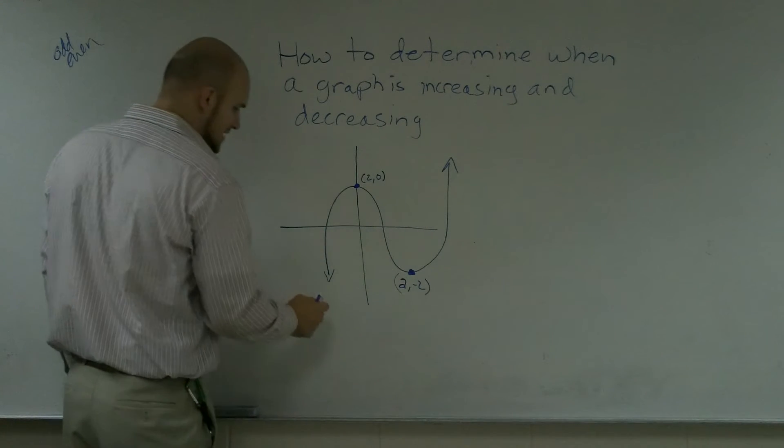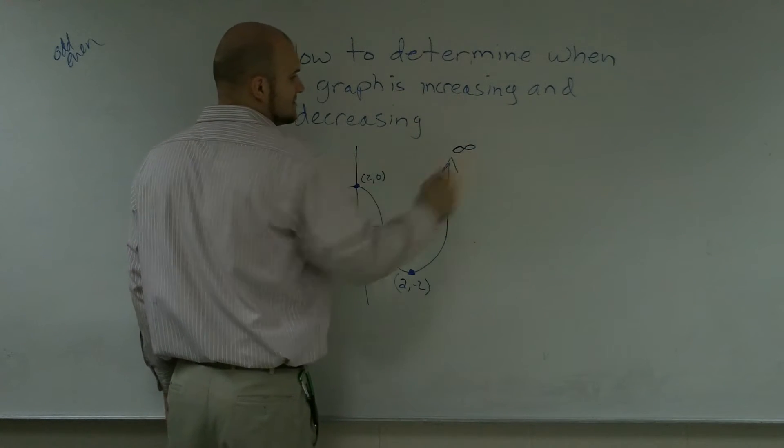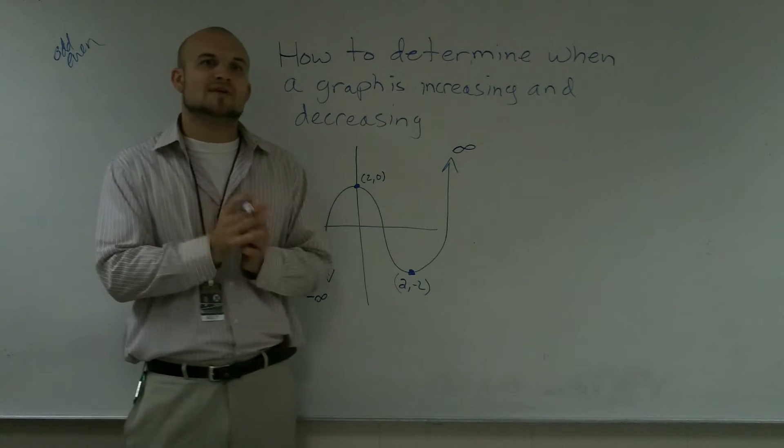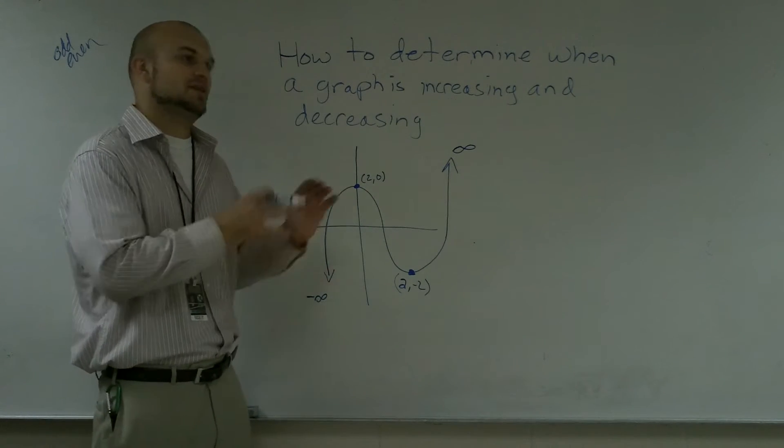Down and to the left we have our negative infinity, and up and to the right we have our positive infinity. Now what I need to determine is from what values this graph is increasing. That means the values of the graph are getting larger.